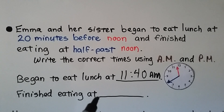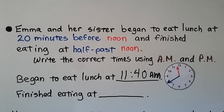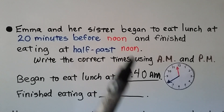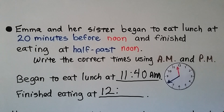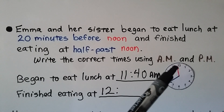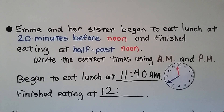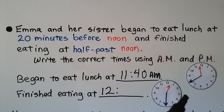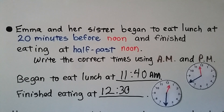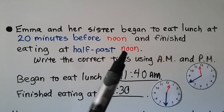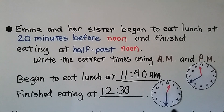They finished eating at half past noon. Noon is twelve, so the hour is twelve. Half past twelve means the minute hand went halfway around the clock, pointing to the six — that's 5, 10, 15, 20, 25, 30. It must be 12:30. It's after 12 o'clock noon, so the hour hand is starting its second time around the clock face. That means it must be P.M. If you said 12:30 P.M., you're right!